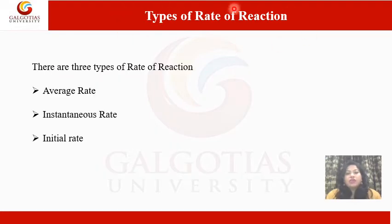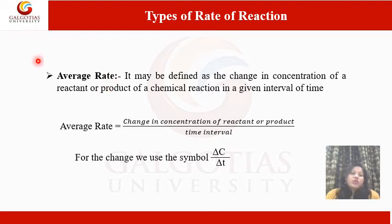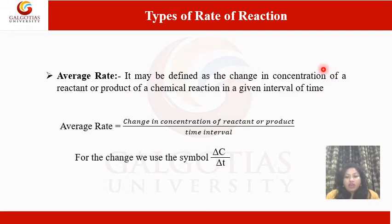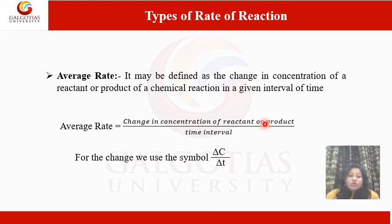Now we discuss types of rate of reaction. There are 3 types: 1) Average rate, 2) Instantaneous rate, 3) Initial rate. Average rate is defined as the change in concentration of reactant or product in a given interval of time. Formula: average rate = ΔC/Δt, using the symbol delta (Δ) for change.